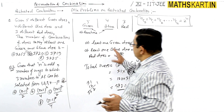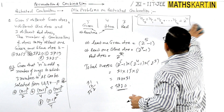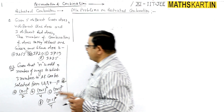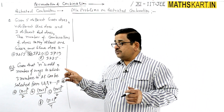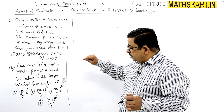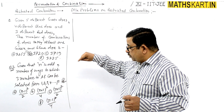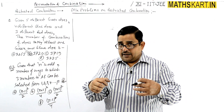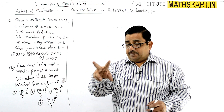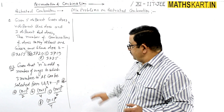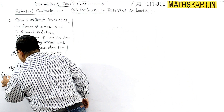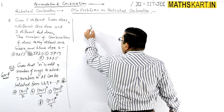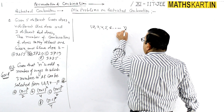Now we move to the second question. It is given that n is an odd number. We need to find the number of ways in which 3 numbers in AP can be selected from 1, 2, 3, ... up to n, where n is odd.